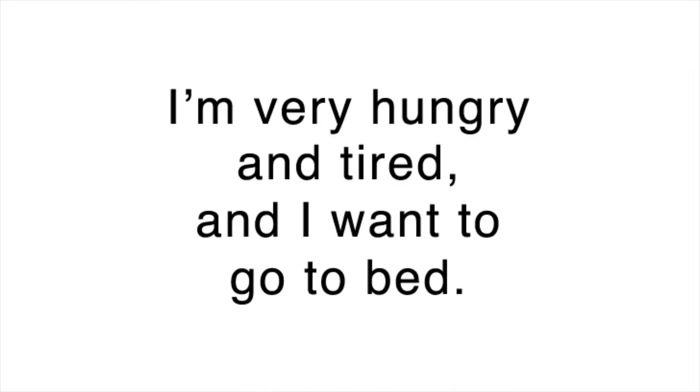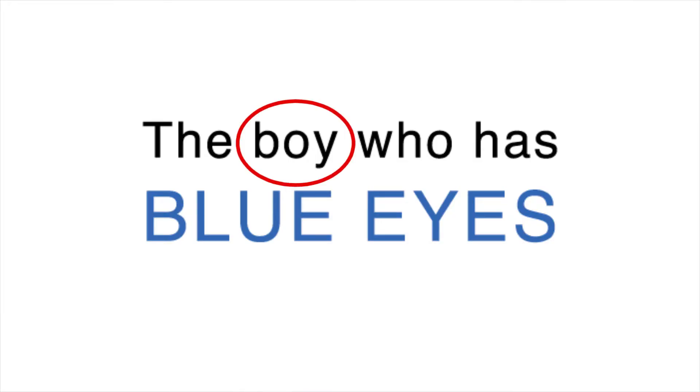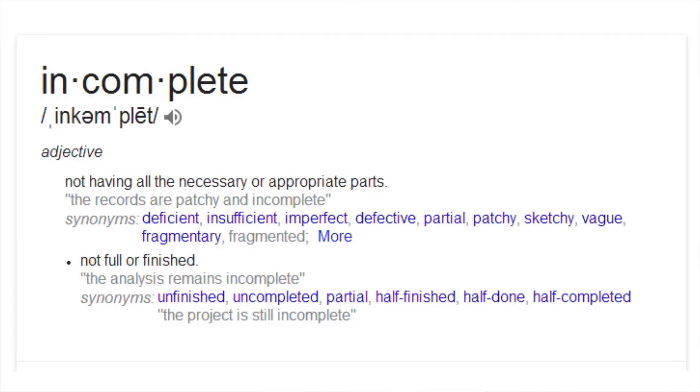The sentence should read: 'I'm very hungry and tired, and I want to go to bed.' An incomplete clause might look something like 'the boy who has blue eyes.' What's wrong with this sentence? It has a subject — the boy — but no verb. We have absolutely no idea what the boy who has blue eyes is doing. That's why we call this clause incomplete. The sentence should read: 'the boy has blue eyes.'